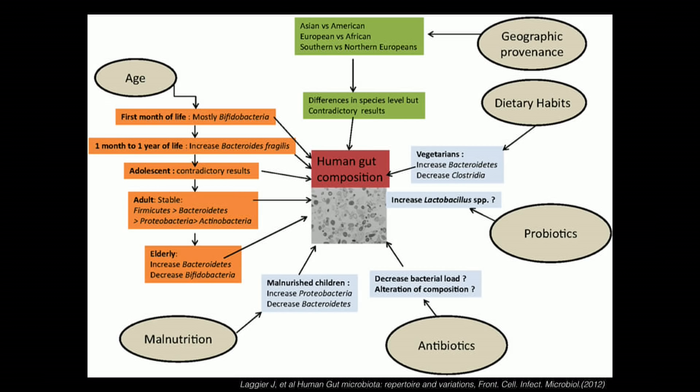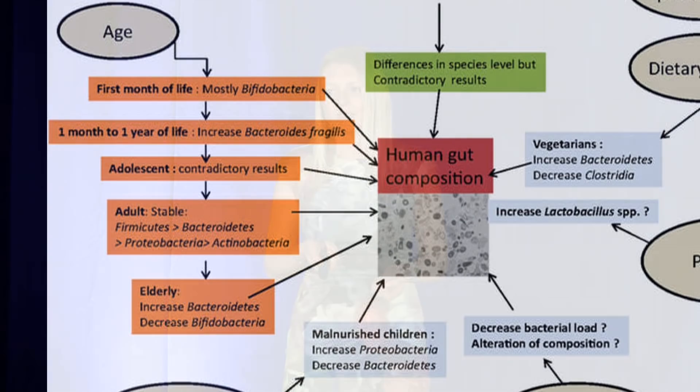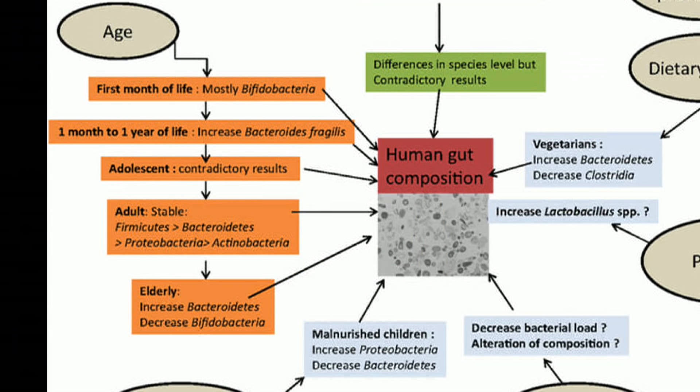Malnutrition is another factor — malnourished children who don't get the phytonutrients and vitamins they need actually have different microbiomes with decreased healthy bacteria. And then there's age. Throughout our lives our microbiome changes. We're born with very little bacteria and develop our microbiome from influences from our mother, close contacts, family, and where we grew up. As adults, our microbiome stays relatively stable unless there are major insults like antibiotics. But as we become elderly, we lose a lot of that diversity — and diversity is good. When you lose it, you become more susceptible to chronic illness.